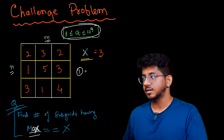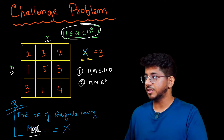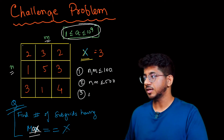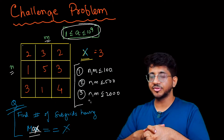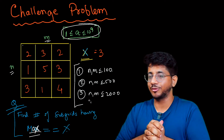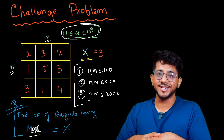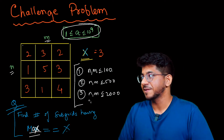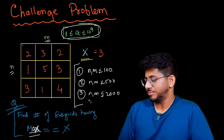I'll give you certain subtasks. One: N, M up to 100. Two: N, M up to 500. Three: N, M up to 2000. Try to solve it for 100 first, then think about how to solve it for 500, and then how you might solve it when constraints are up to 2000.